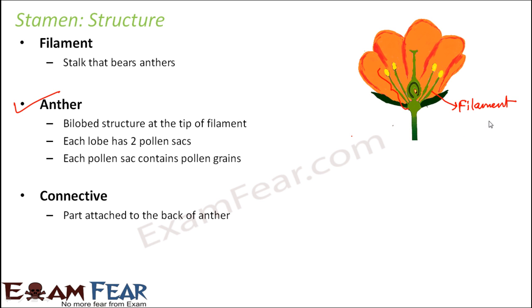The next part is the anther. The anther is this swollen structure at the top, and it is a bilobed structure — bi means two, so two lobes. You can understand it as two compartments within this structure. The anther is divided into two compartments, and each of these lobes has two pollen sacs, meaning one lobe is divided into two sacs, and the second lobe is also divided into two sacs — basically four pockets inside the anther.